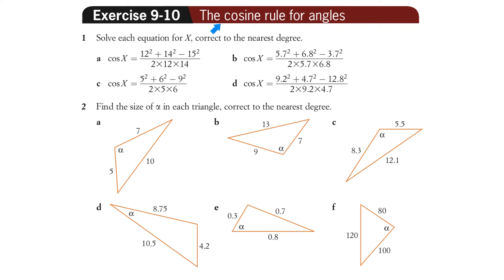Exercise 9-10, the cosine rule for angles. Solve each equation for x, correct to the nearest degree. This is just calculator practice. I do suggest in your graphic display calculator, you use the fraction key so you can just put the top line and also the bottom line. It'll save you making mistakes if you do that. So make sure you can locate that in your calculator.